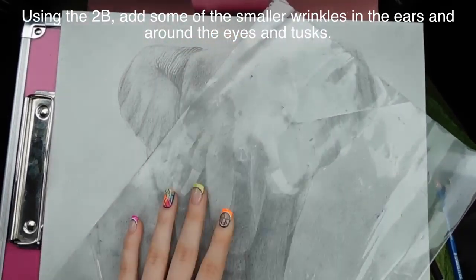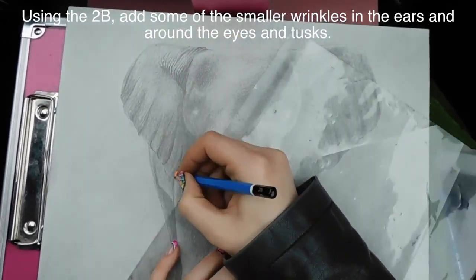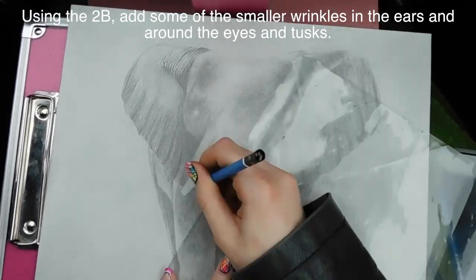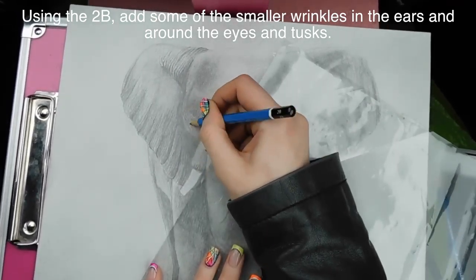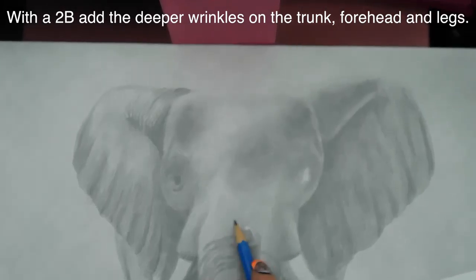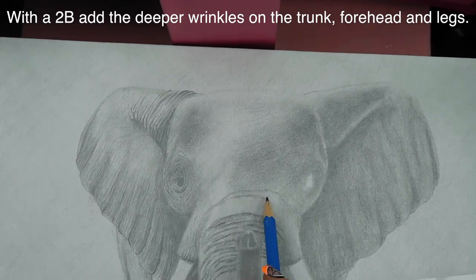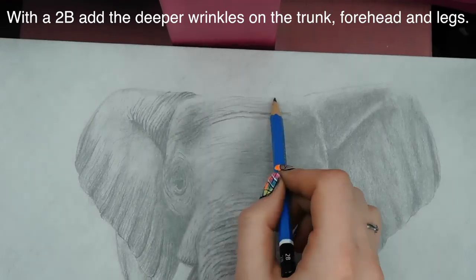Using a 2B, I'm going to start adding in the wrinkles of my elephant. This is really the part where it makes his skin texture show through and makes him look nice and alive. You want to make sure that you follow the planes of his body when you're adding the wrinkles so that they are the appropriate shape.